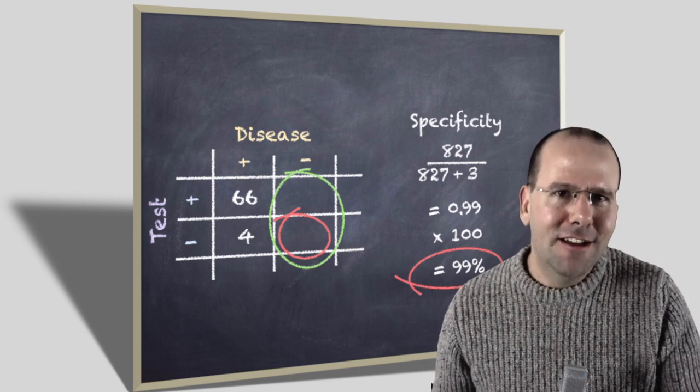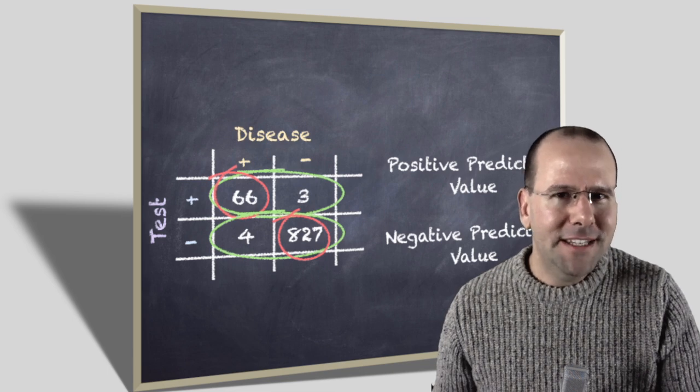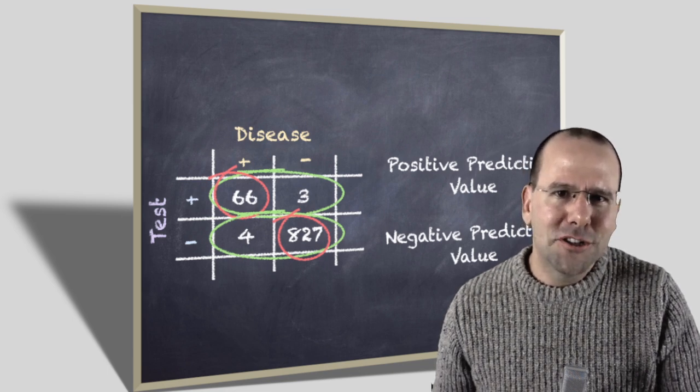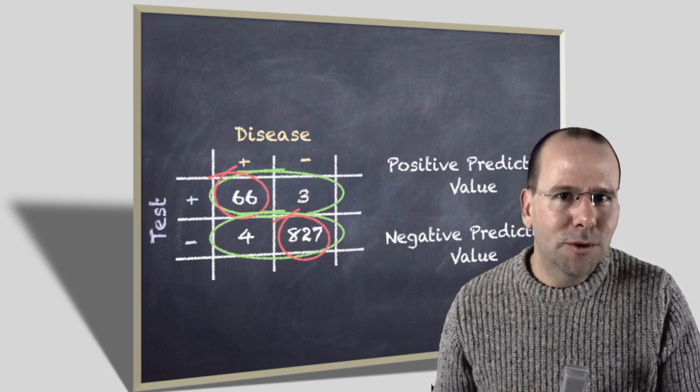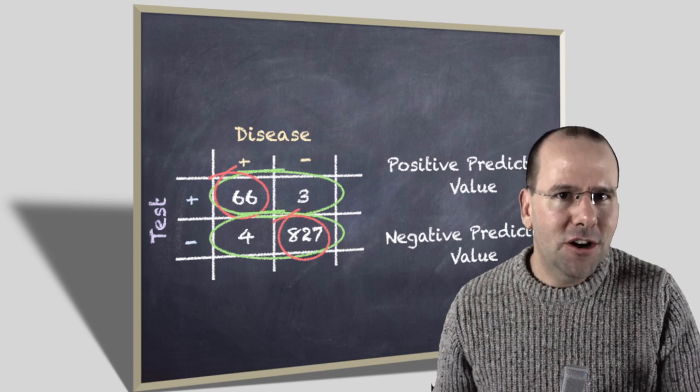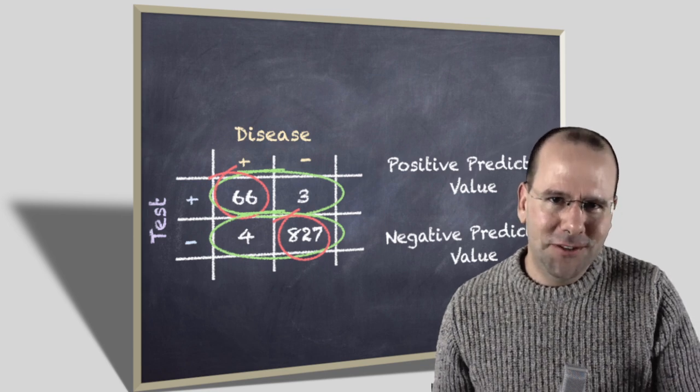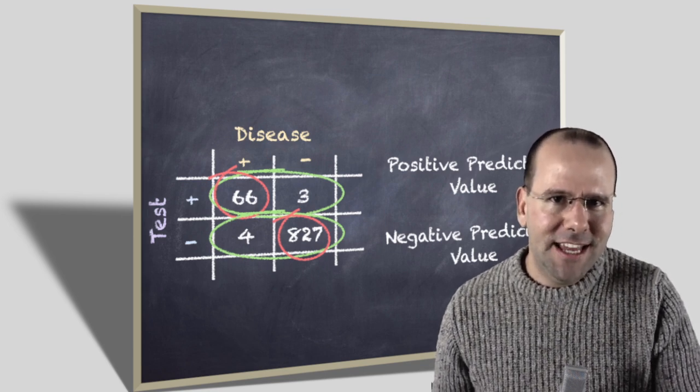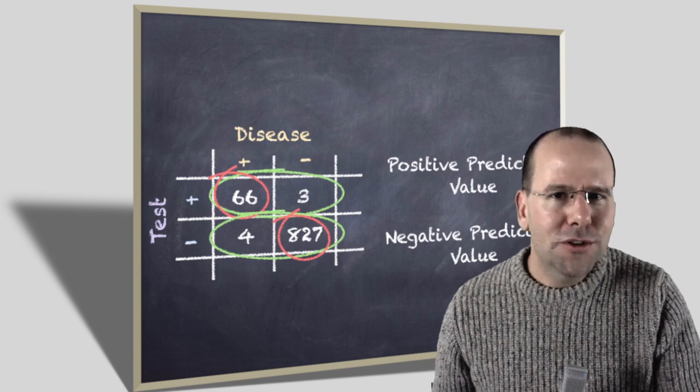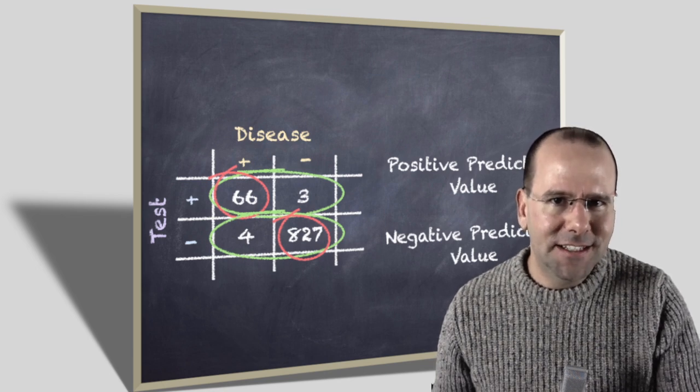So I'm not going to go through all the calculations again for positive and negative predictive value. Basically the exact same principle applies. The positive predictive value is the proportion of people who test positive who actually are positive. So the positive predictive value tells me if I go for a test and I test positive, what are the chances that I actually have the disease?